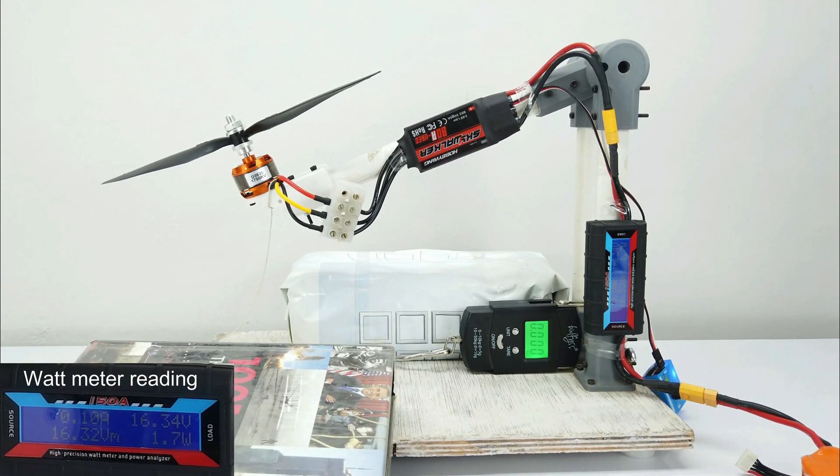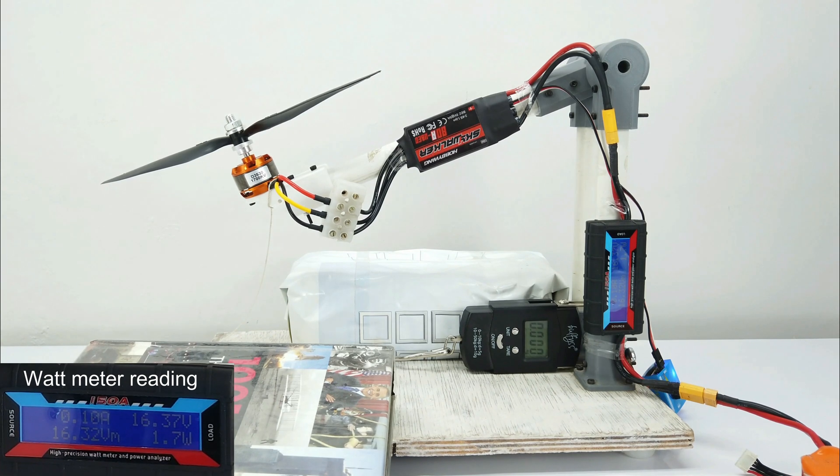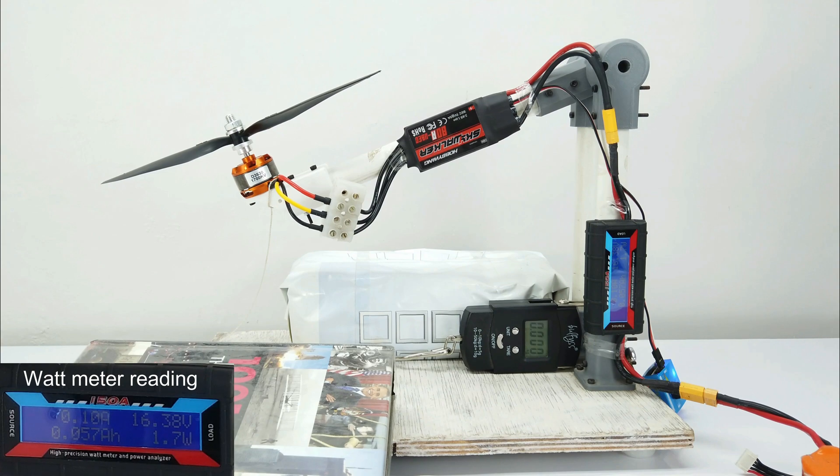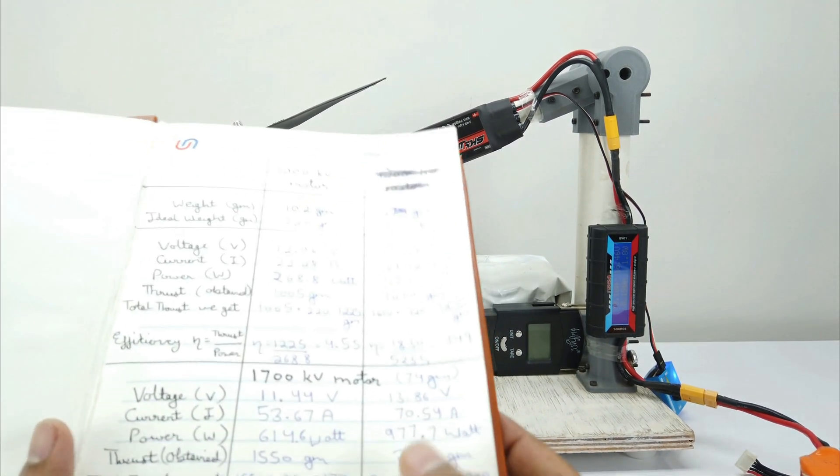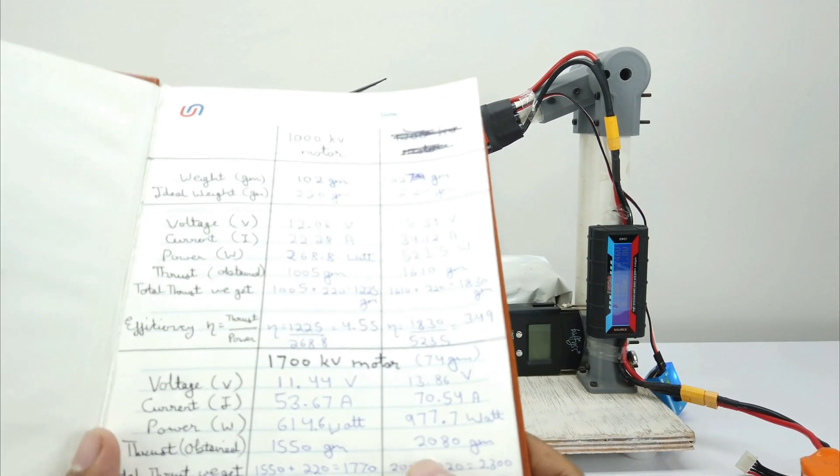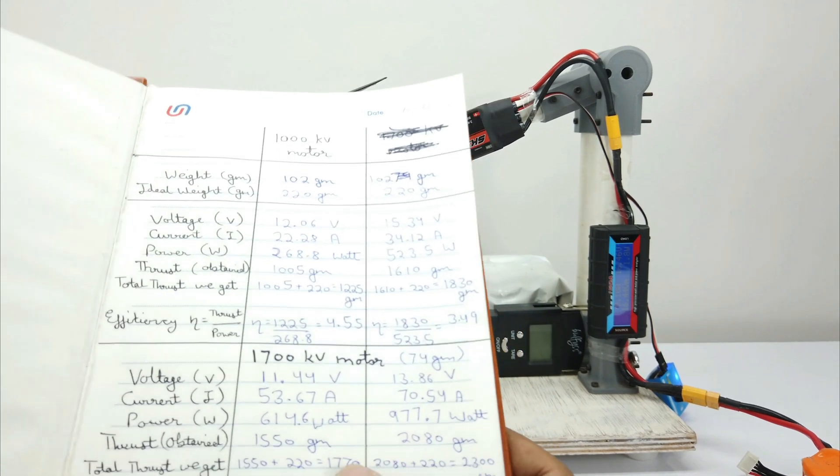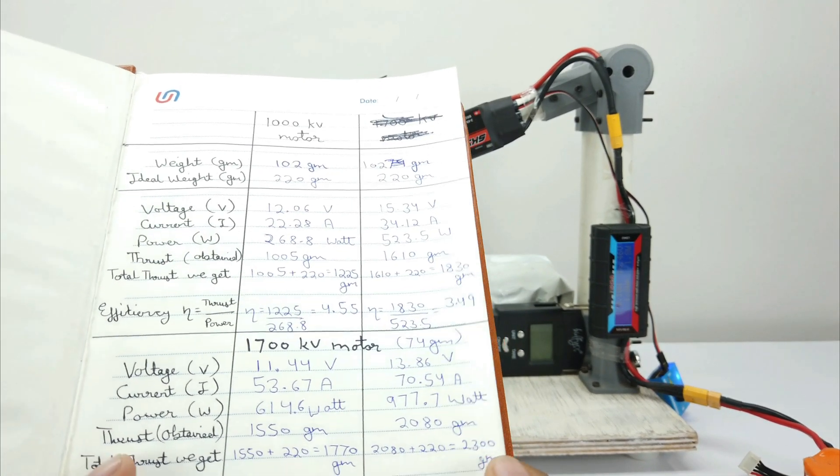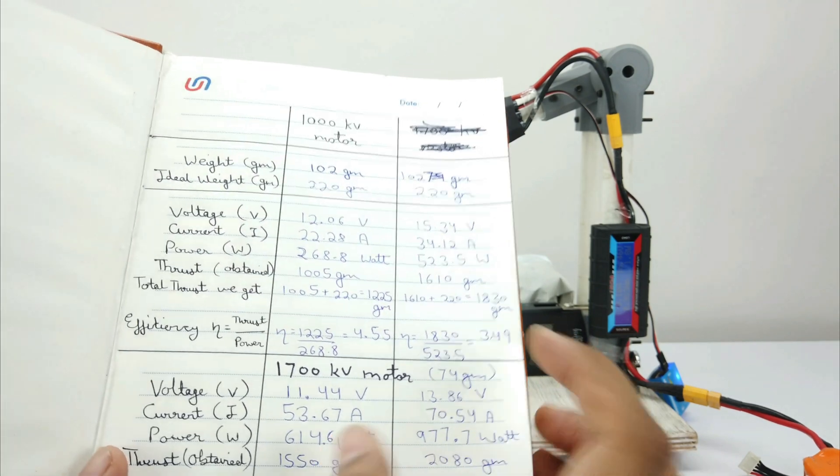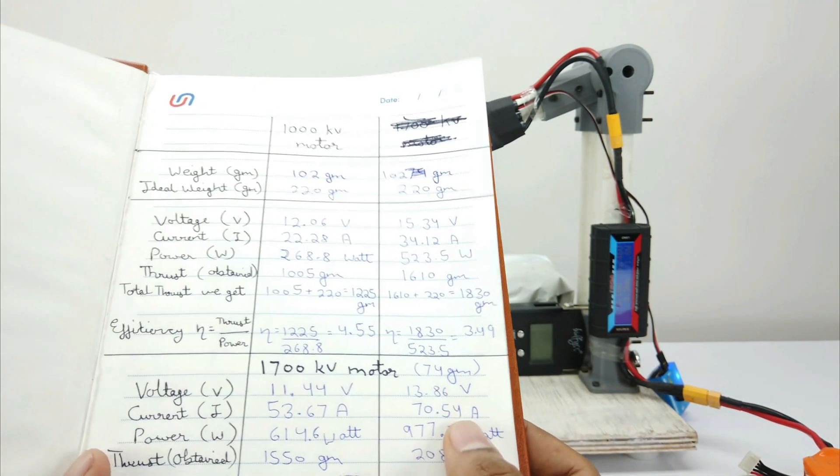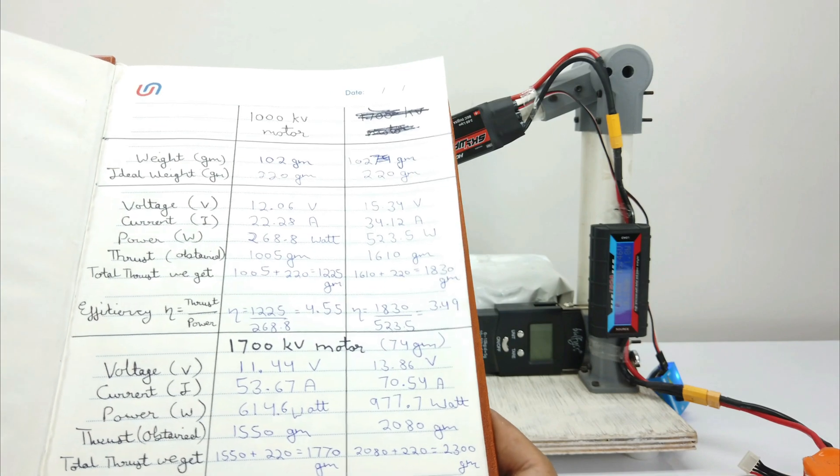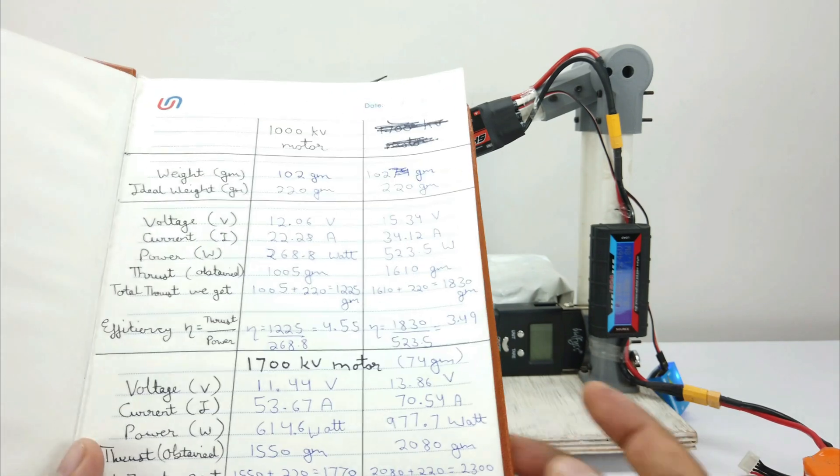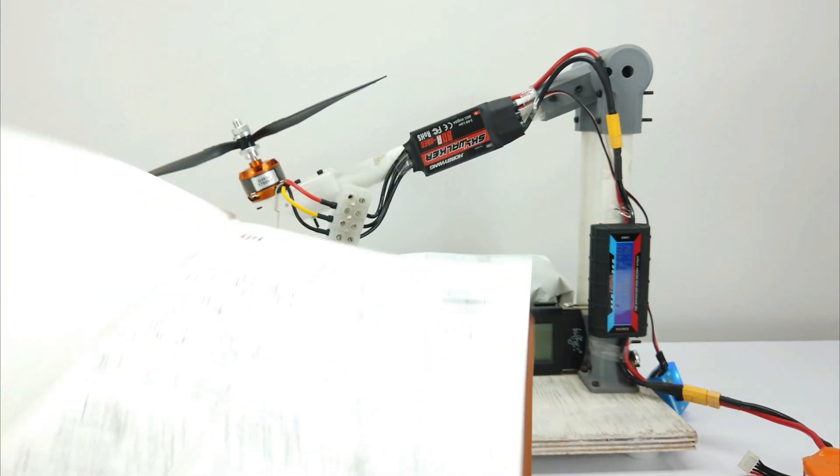Even now I took it up to 90% throttle and then it started making too much noise, so I reduced the throttle. Now I will share its data with you. So I have calculated its thrust using a 4S battery. The obtained thrust is 2080 grams and our total thrust by adding the ideal weight is 2300 grams, which is too much for this motor, but at the same time it has consumed too much current of 70.54 Amperes. Its efficiency is 2.35, so it is least efficient but gave the highest thrust.